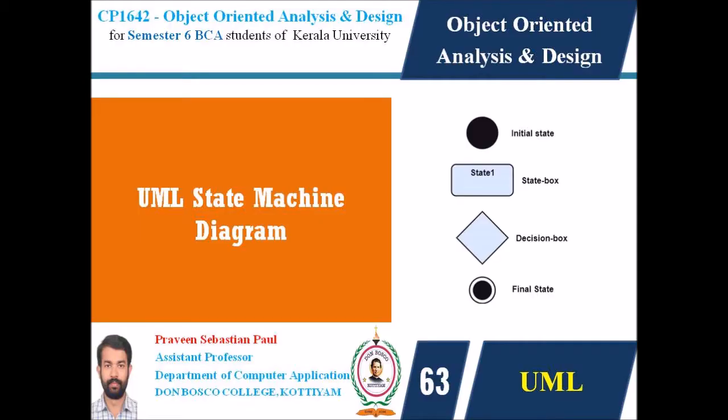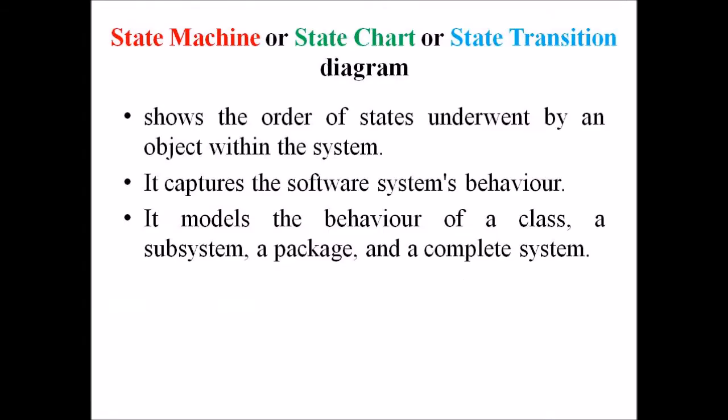Hi students, I am Pravind Sebastian Paul. In this lecture we are discussing UML State Machines. This UML State Machine is a UML Behavioral Diagram. A State Machine Diagram is also known as a State Chart Diagram or simply a State Transition Diagram. This diagram shows the order of states underwent by an object within the system and it captures the software system's behavior.